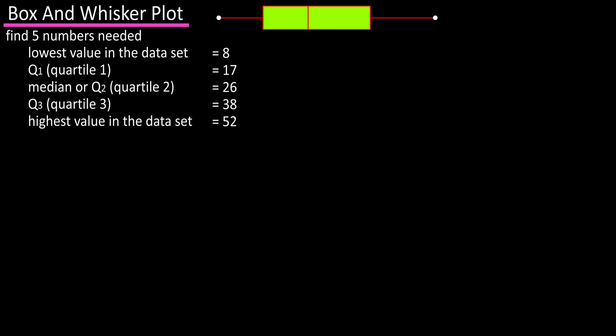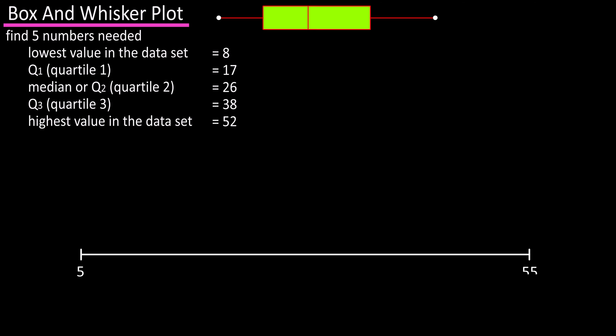Now that we have our five numbers, we can draw a horizontal axis like this. I'm going to put a mark on the axis near the left end of the line and mark that as 5, slightly less than the lowest value in the data set.